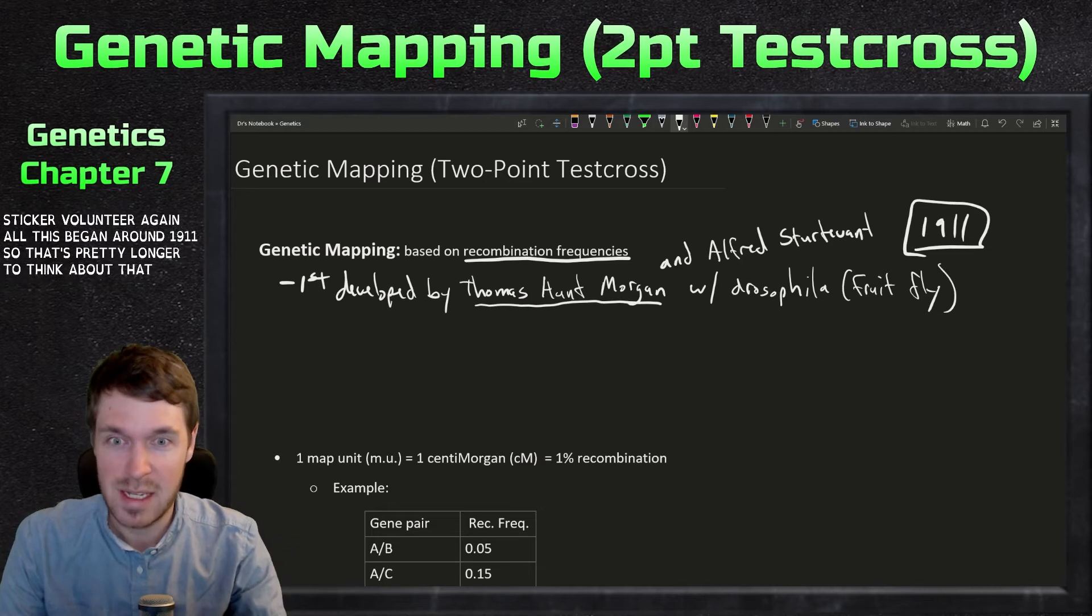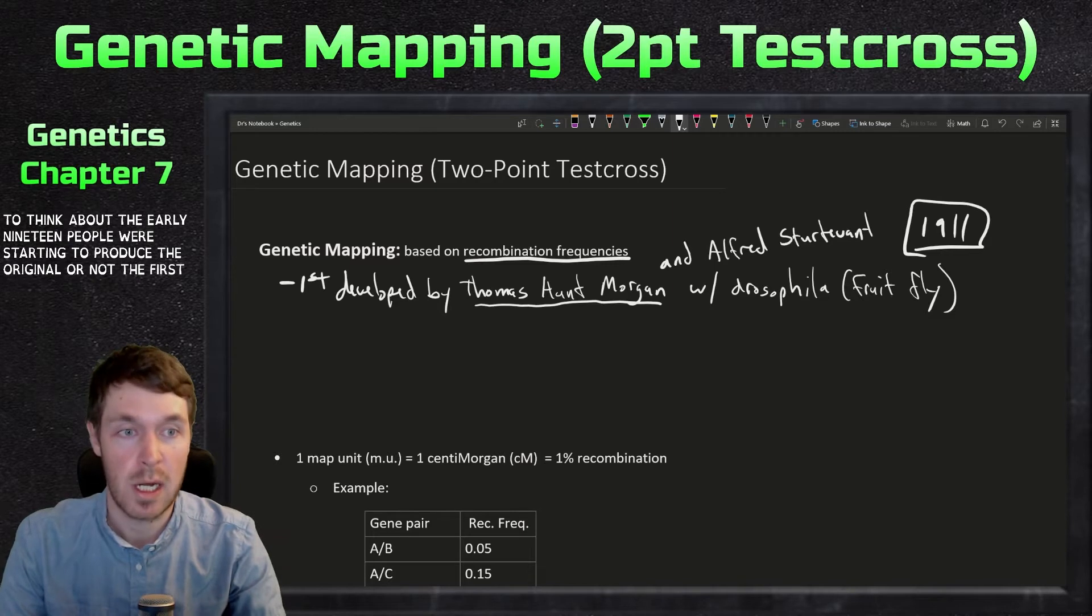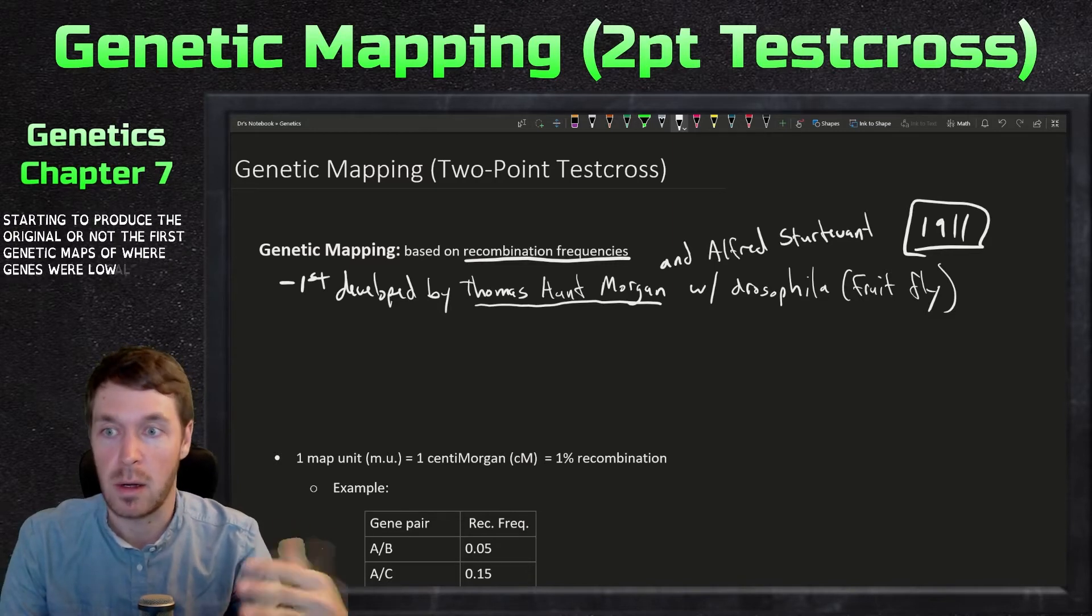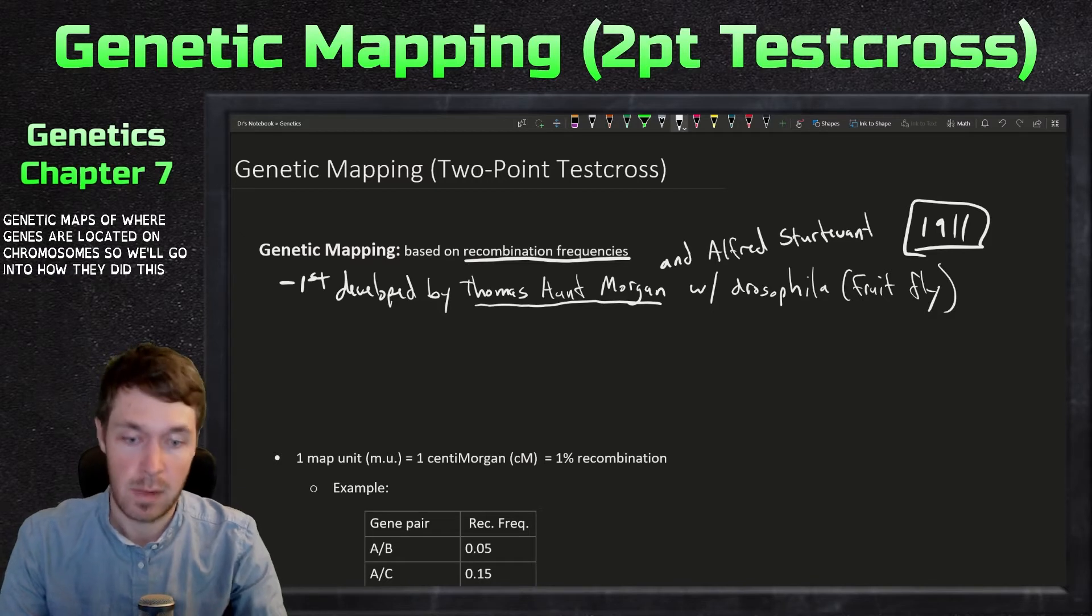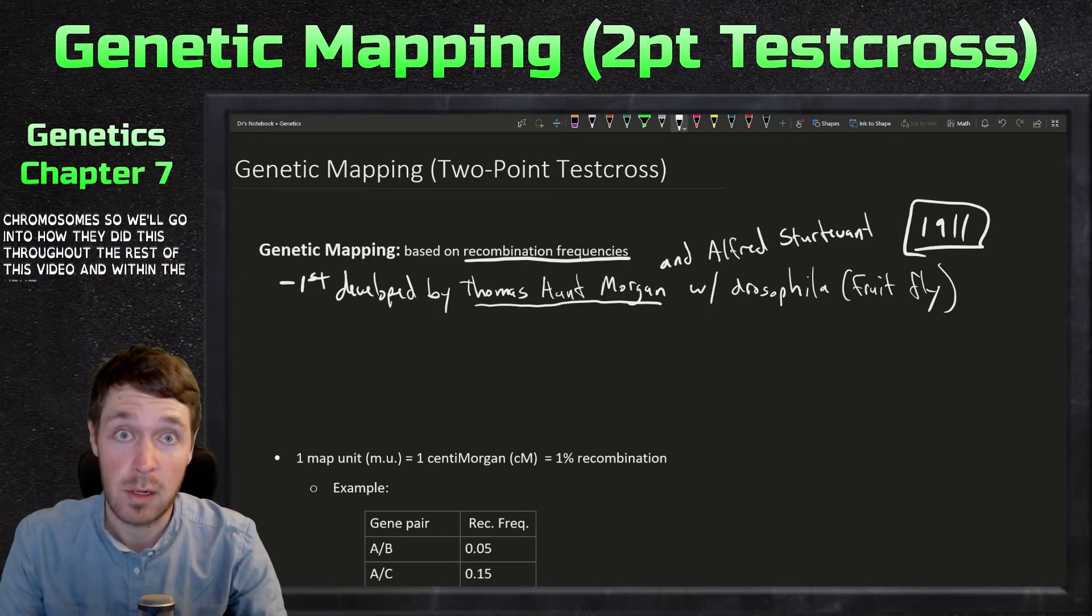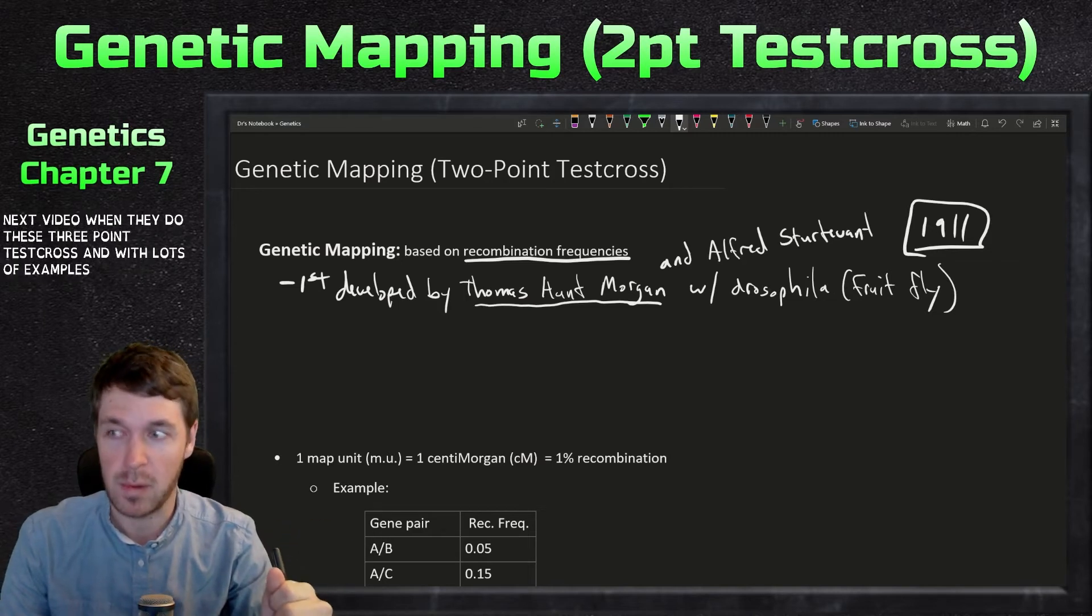Think about the early 1900s, people were starting to produce the original or the first genetic maps of where genes were located on chromosomes. We'll go into how they did this throughout the rest of this video. And within the next video, when they do the three point testcross, we'll do lots of example problems with those.